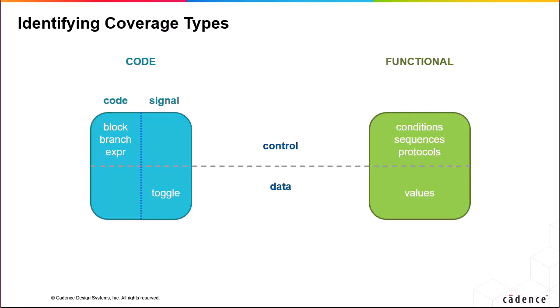Functional coverage is at the signal level of abstraction. You can specify to score these functional coverage items either synchronously, sampled upon the occurrence of an event, or asynchronously, as they change state.